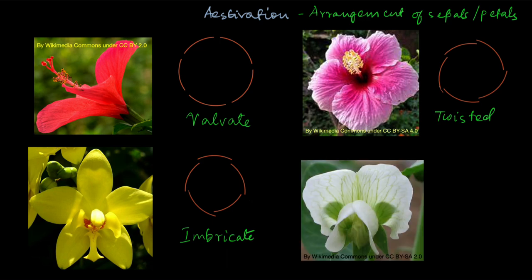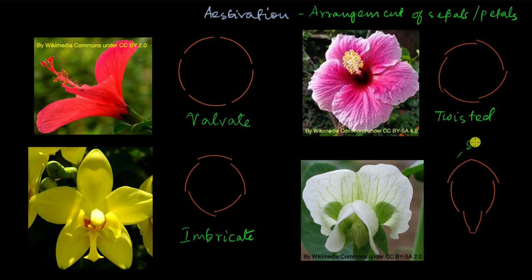The last kind of aestivation we are going to look at is found in the pea flower and all flowers that belong to the pea family. In this aestivation it looks very different from all the others — there is a big petal which overlaps all the other petals. Then there are two petals overlapped by the biggest petal, and then the smallest petals which are overlapped by all the other petals. The biggest petal is called the standard, which means a flag or banner, and it is called the standard because it is big like a flag. The standard overlaps two petals on the sides called wings.